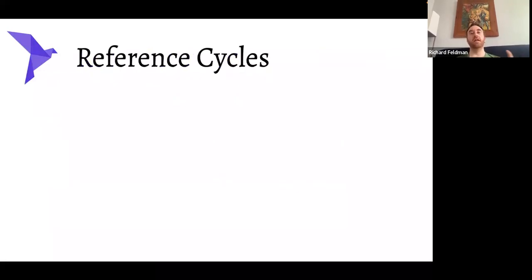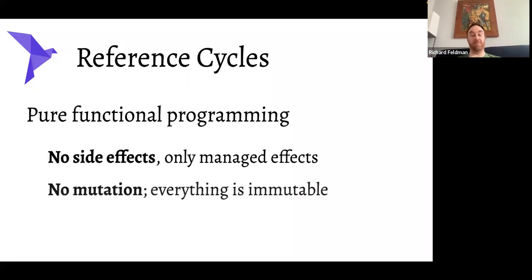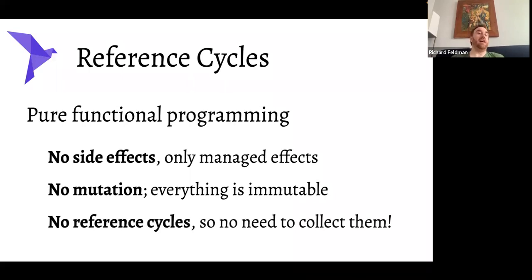A note on reference cycles: people often ask how we detect reference cycles when Roc uses automatic reference counting. In pure functional programming there are no side effects, only managed effects. With no mutation and everything immutable, there is no way to define a reference cycle in Roc — it's simply not a thing you can write in the language. So we don't have to collect them. This is one of several nice upsides of pure functional programming that makes things faster.